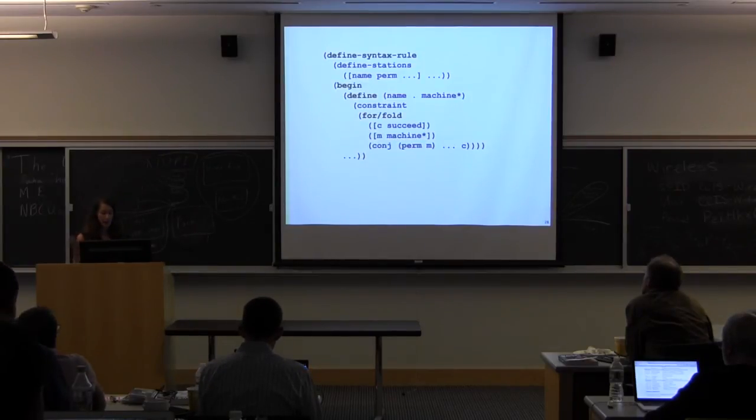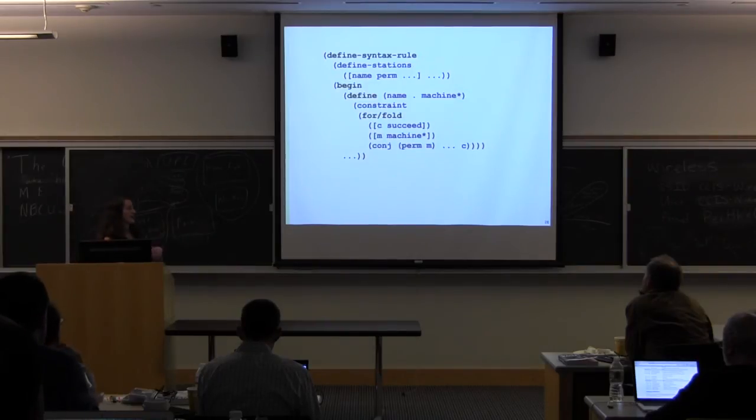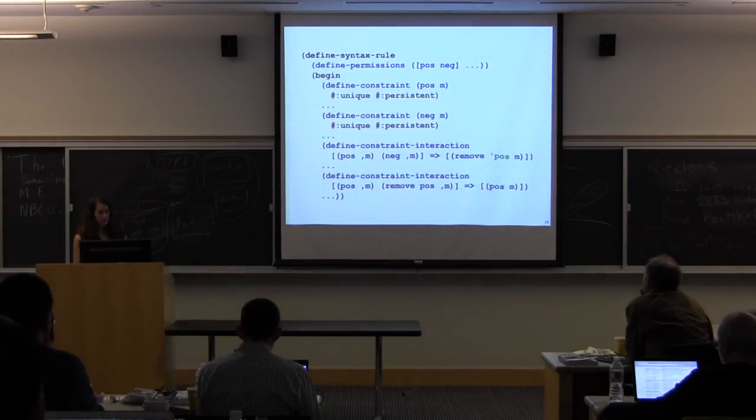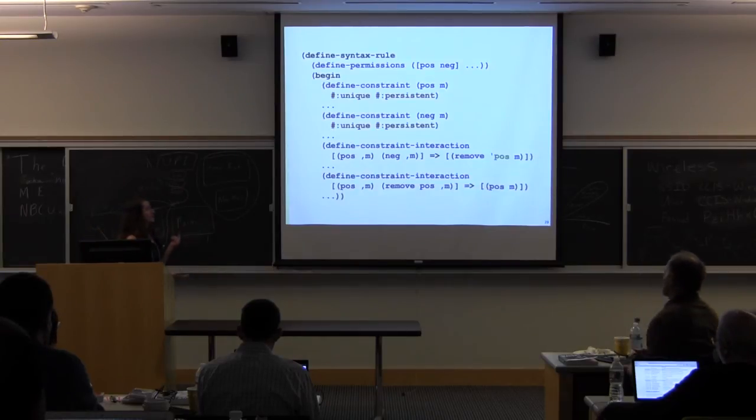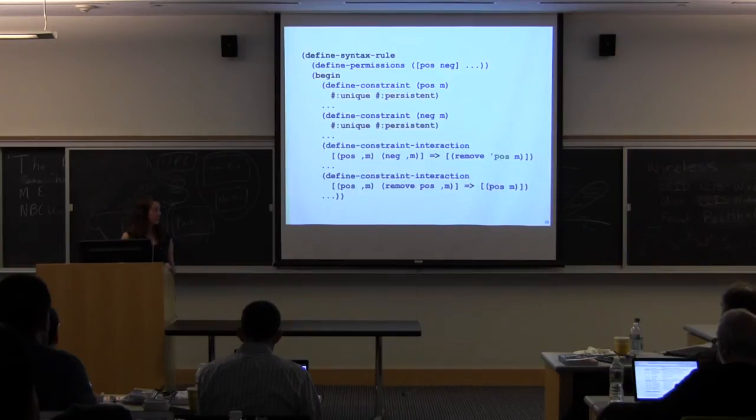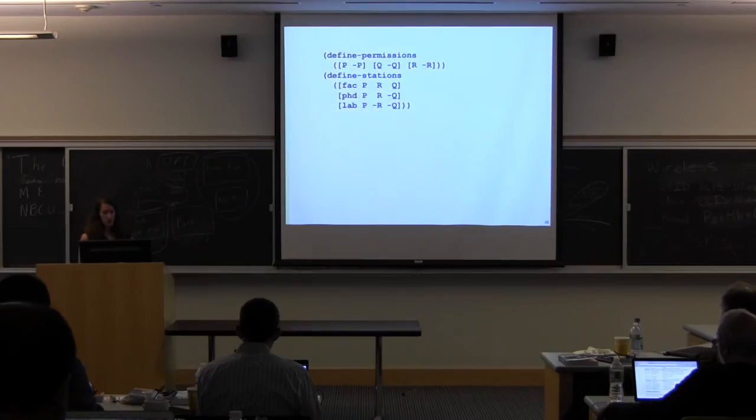So I have defined a macro that will, given a list of names of locations and the permissions they should have, generate all the code that I need to have my constraints. And similarly, if I have permissions like positive and negative permissions, I can say, well, I have this positive constraint and this negative constraint. And then I define those, create these defined constraint interactions inside of there. So this is all abstracted over the permissions. So I'm able to kind of collapse my code into this. I have these permissions with the positive and negative permissions. And then I have these locations that should have these permissions.